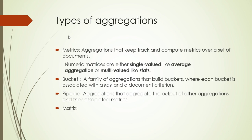We have basically four types of aggregation: metric, bucket, pipeline, and matrix. Matrix aggregation keeps track and computes metrics over a set of documents. It extracts values in different ways — typically from fields of a document, but can also be generated using a script. These fall into two categories: numeric metric aggregation, which outputs numeric values. Some output a single numeric metric, called single-valued, and some generate multiple values, called multi-valued aggregation.